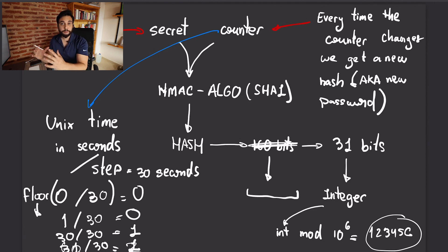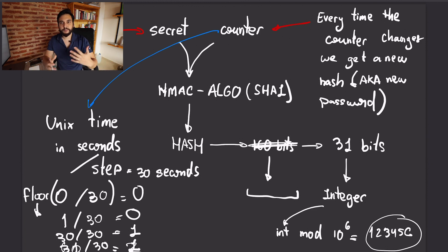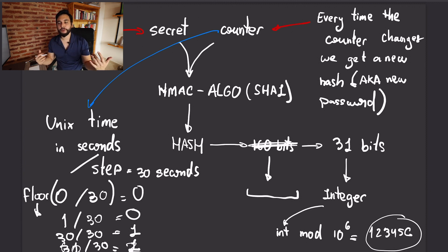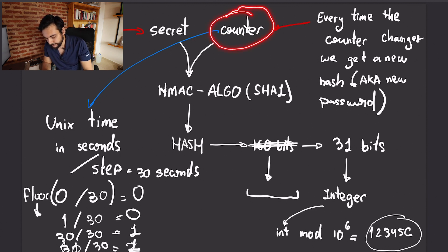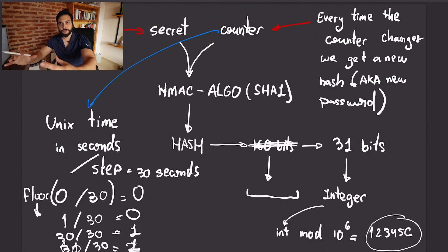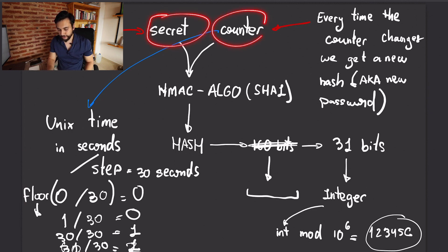TOTP is HOTP with the counter being time-based. Now let's look at how this would work end to end. Both GitHub — or whatever service you're using — and your phone have the counter and the secret. It's important that both your phone and the server have these two values so they can both go through the process and arrive at the same code.